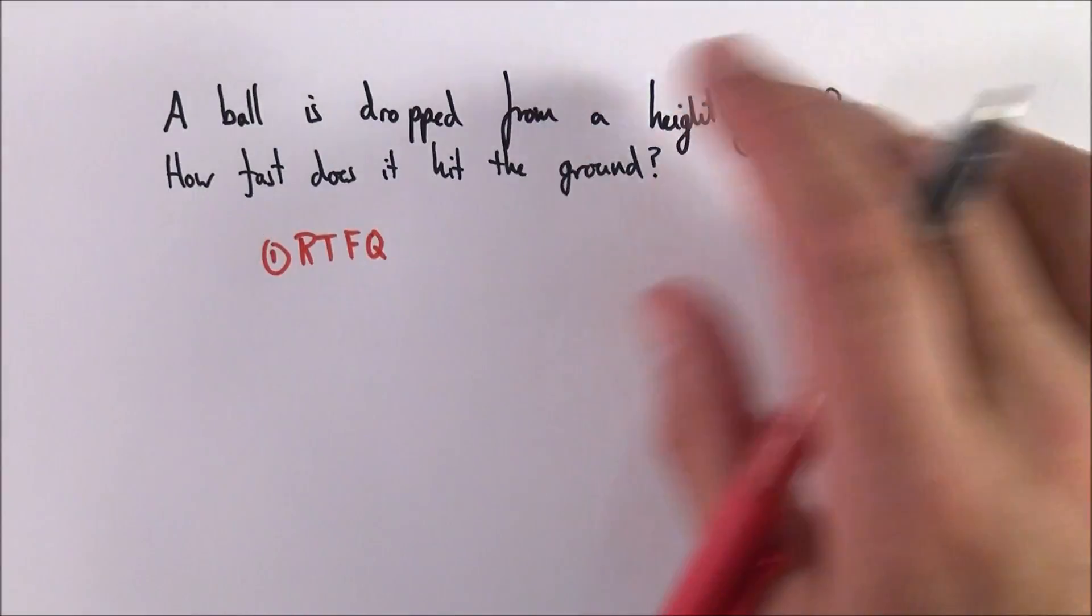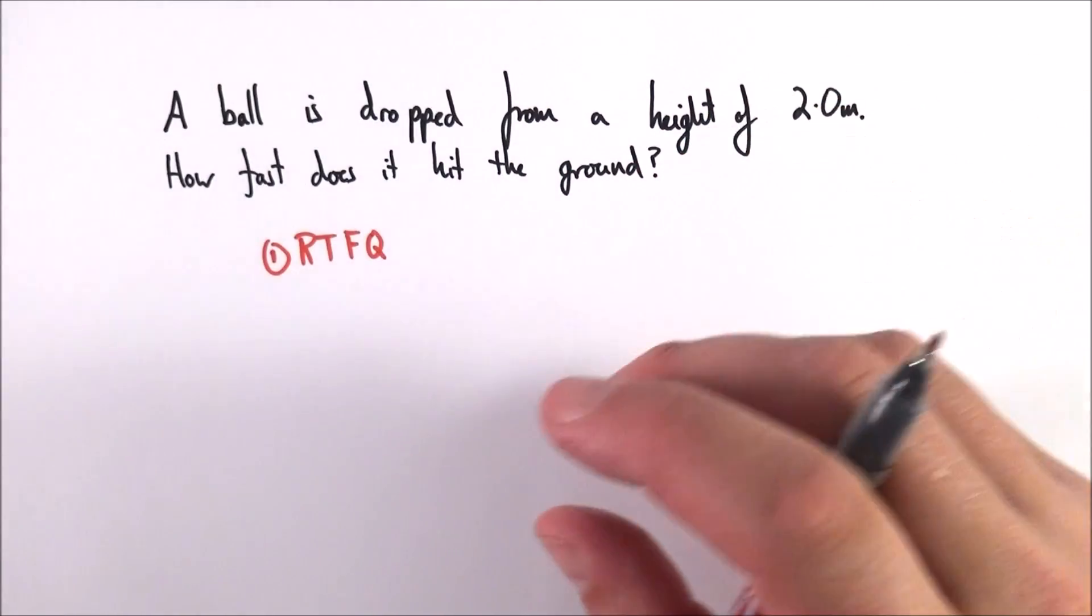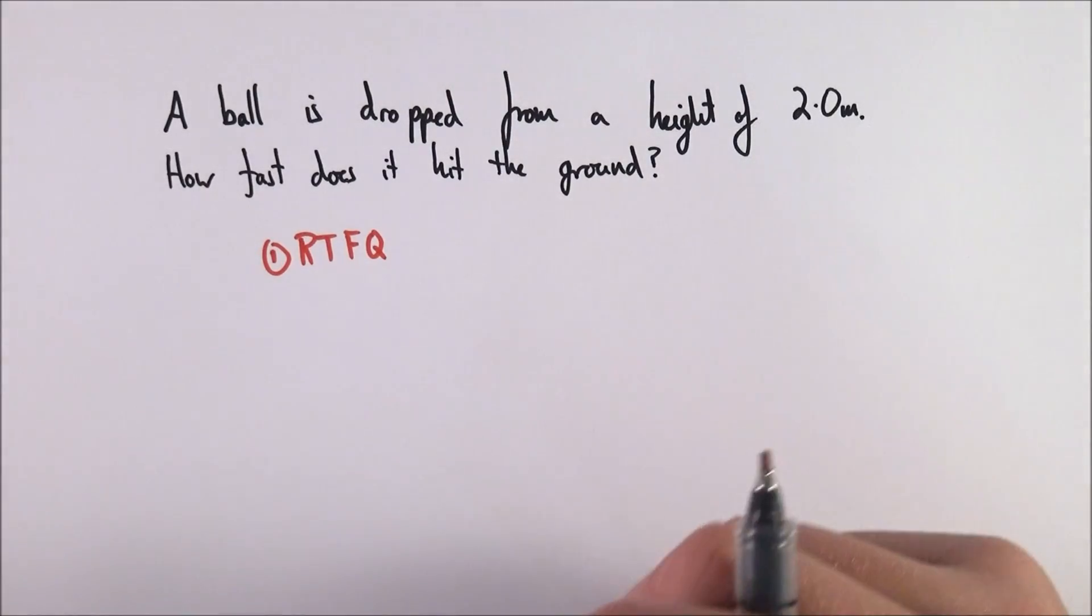So read the question, maybe underline key terms, underline any key numbers, and then you can do the next step which is to draw a diagram.